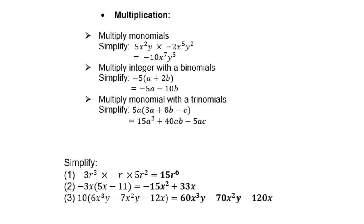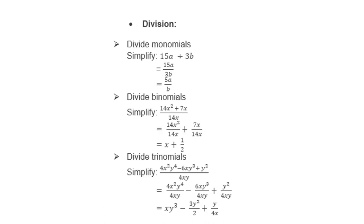Number 3: 10 times 6x cubed y is 60x cubed y; 10 times negative 7 is negative 70x squared y; and 10 times negative 12 is negative 120x. Let's do some division. Divide monomials: 15a divided by 3b — 3 goes into 15 five times, so the answer is 5a over b.